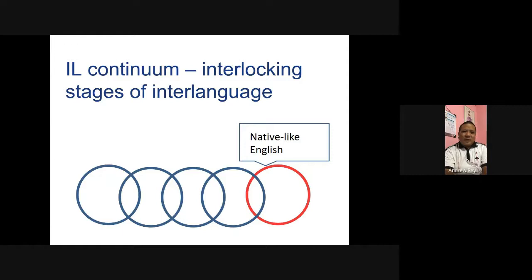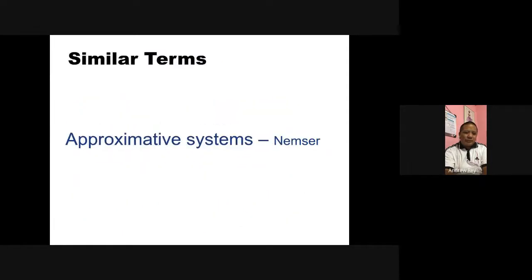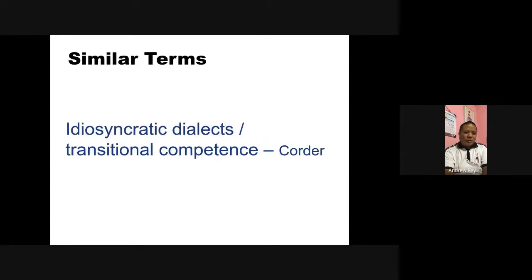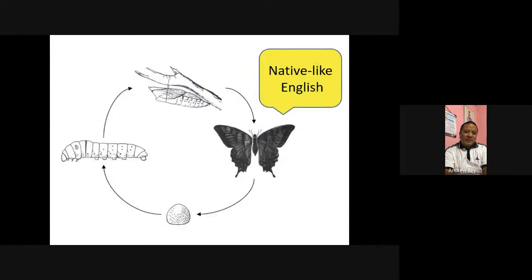According to Nemser, they are approximative systems — they approximate English. According to Korder, they are transitional competence, like transitional grammar. It's not yet the grammar of English; it's just transitional competence. Think of these stages as your interlanguage, like the stages in a life cycle.